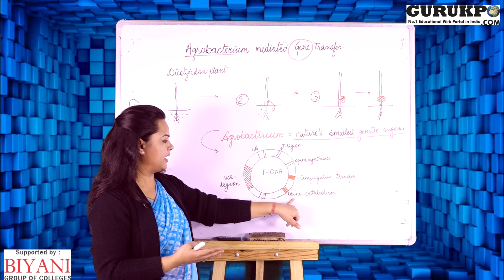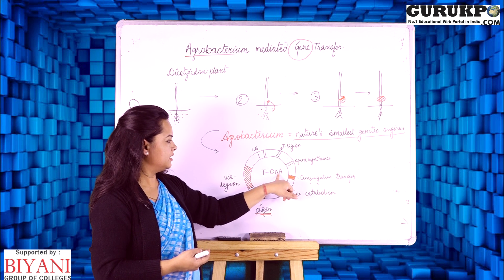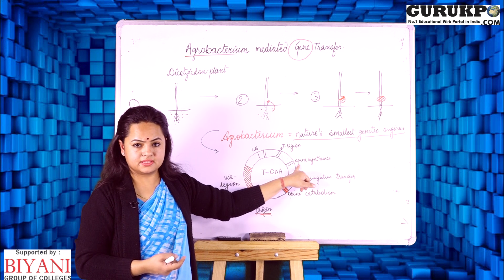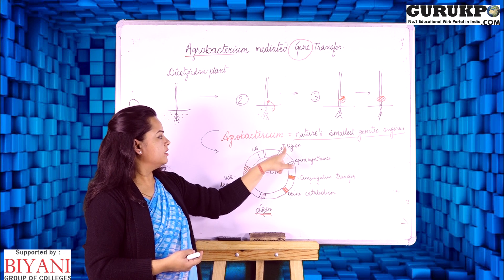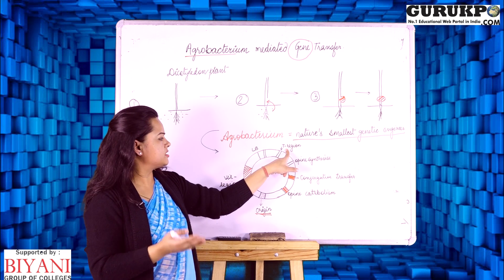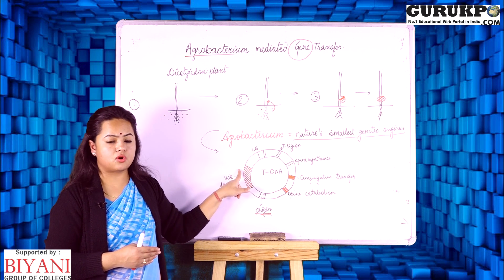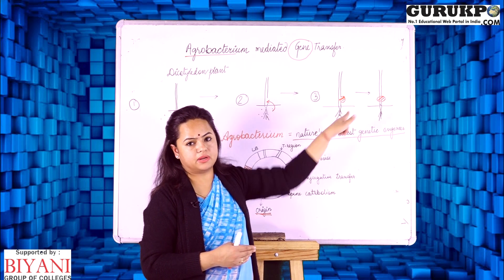This is the opine catabolism region, this is the conjugative transfer region of the T-DNA, this region is responsible for the opine synthesis, this region of the DNA is responsible for the T region which is having all the machineries which has been transferred to the plant system. This is the virulence region, because of this region this crown gall has been appeared in the plant.